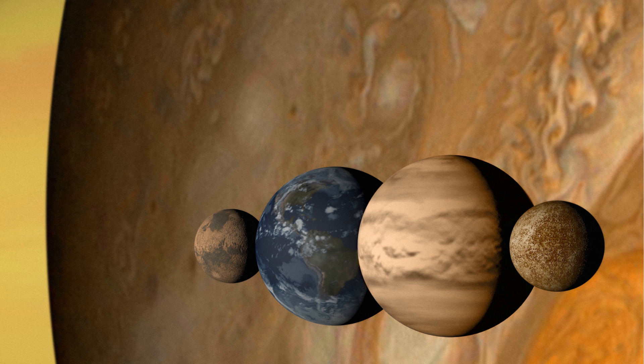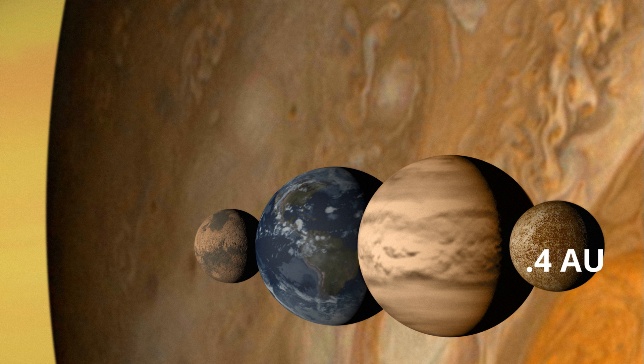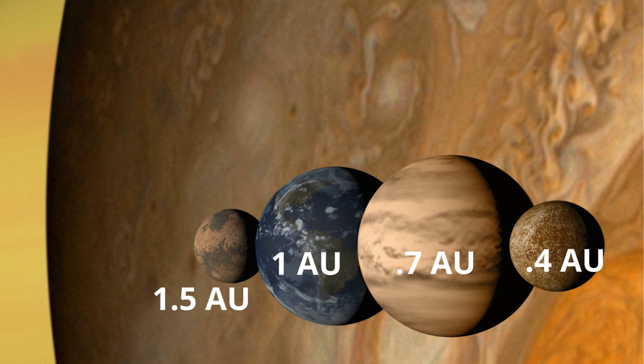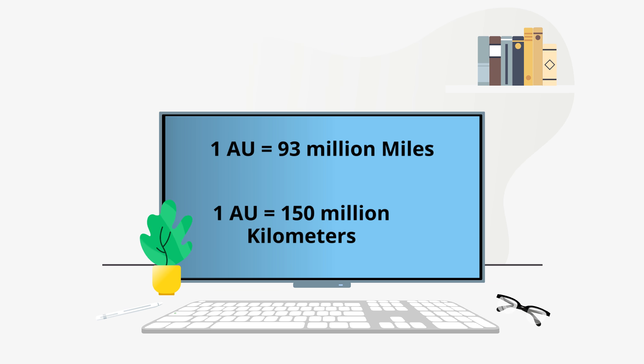Mercury is 0.4 AU units from the Sun, followed by Venus at 0.7 AU, Earth at 1, and Mars at 1.5 AU. An AU, which is called an astronomical unit, is equal to almost 93 million miles or 150 million kilometers.